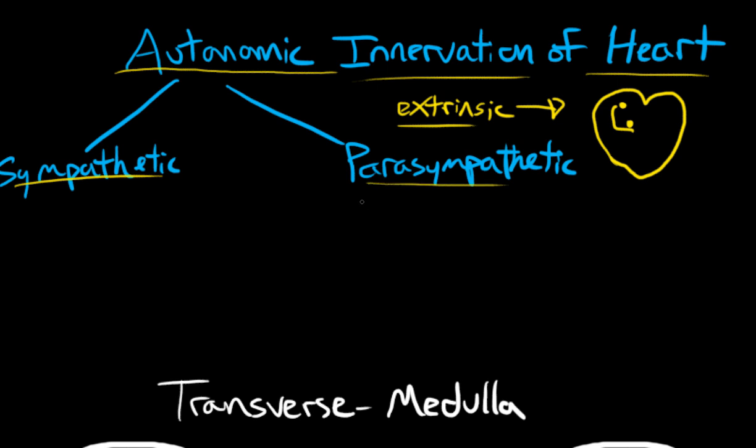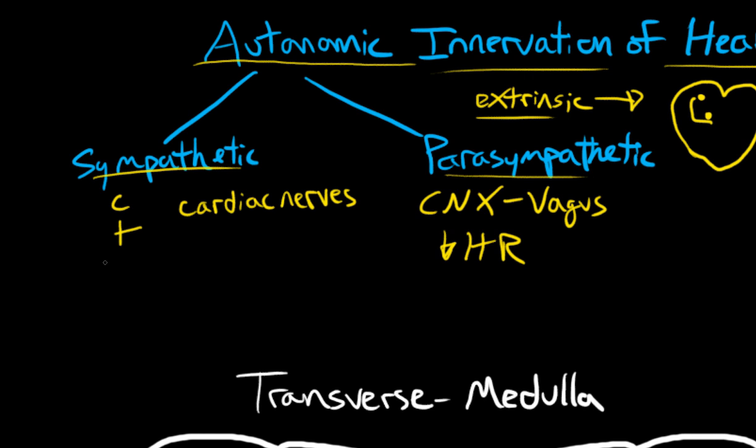And that's going to happen through sympathetic and parasympathetic nerves. With parasympathetic, we're looking really only at cranial nerve 10, vagus nerve. And with sympathetic, we're looking at cervical and thoracic cardiac nerves. Parasympathetic innervation will act to decrease the heart rate, and we'll get into more detail about that, whereas sympathetic will act to increase heart rate.